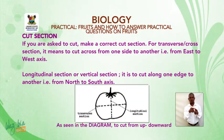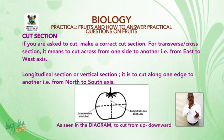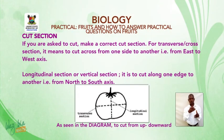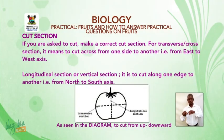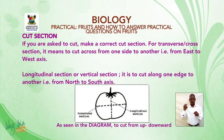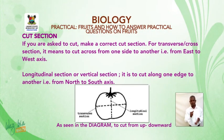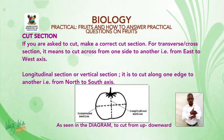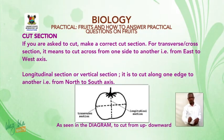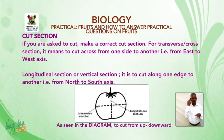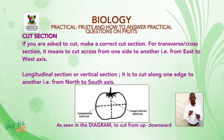Cut section: If you are asked to cut, make a correct cut section. For transverse or cross section, it means to cut across from one side to another — that is, from east to west. For longitudinal section or vertical section, it means to cut along one edge to another — that is, from north to south, or from up downward, as seen in the diagram.